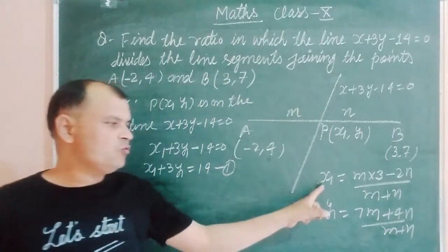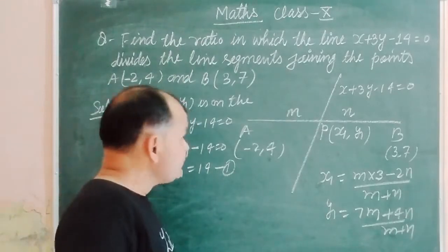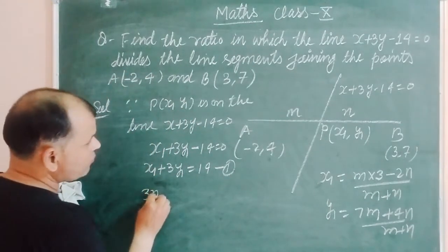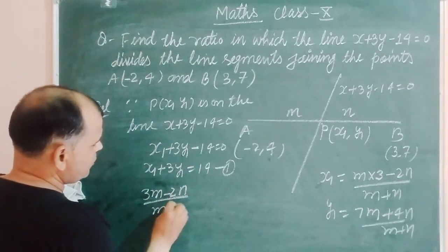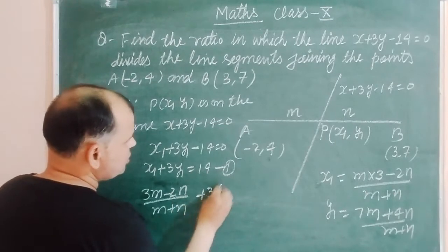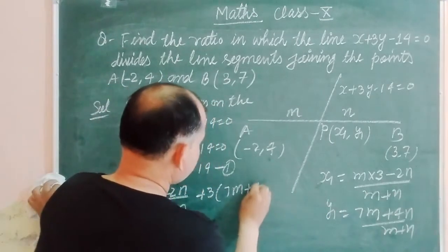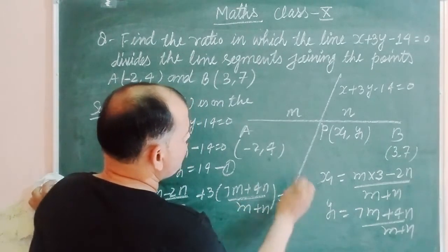Now we put these values of x1, y1 in this equation we got. So here x1 is 3m minus 2n over m plus n, plus 3 times 7m plus 4n over m plus n, is equal to 14.